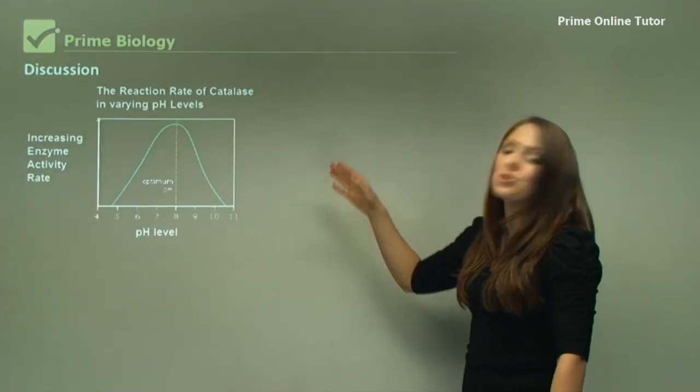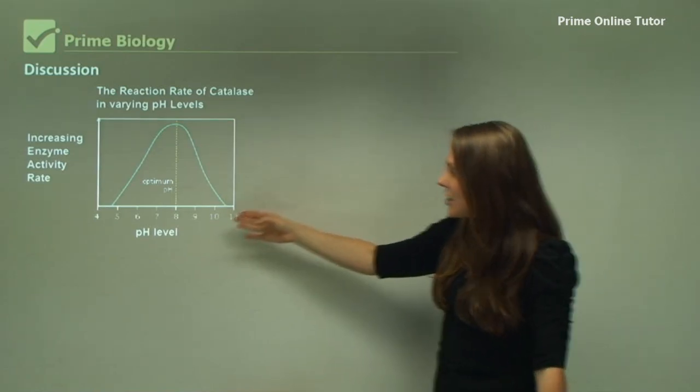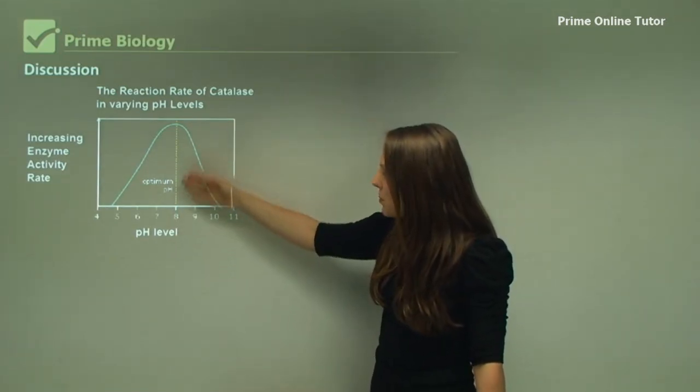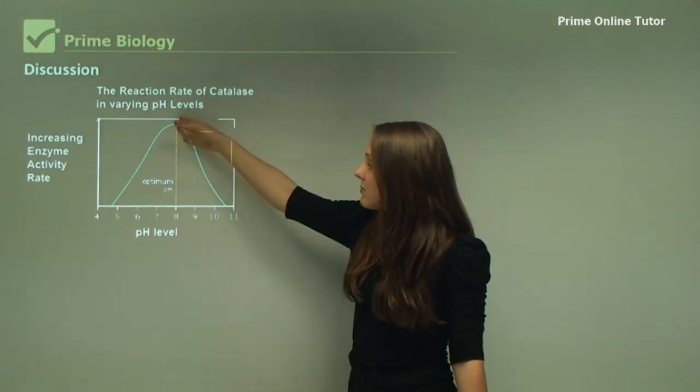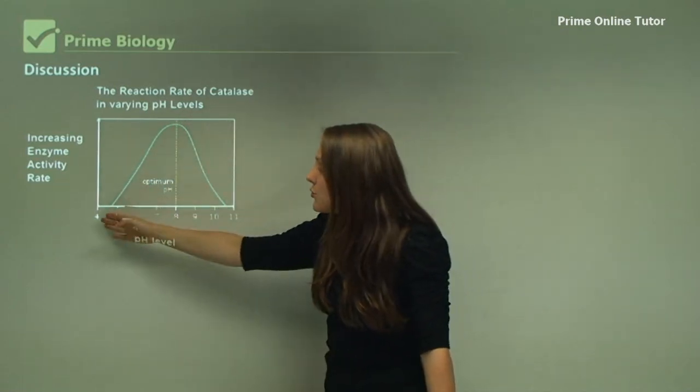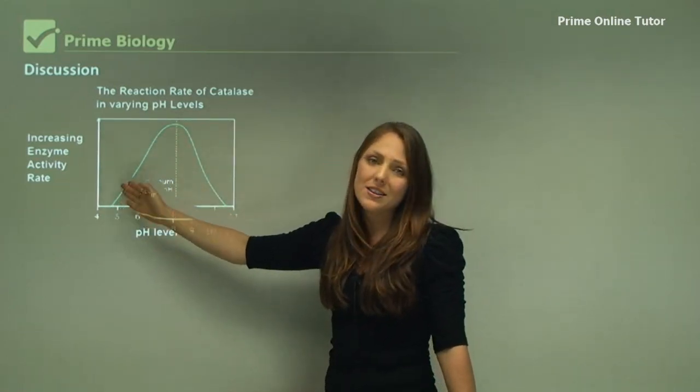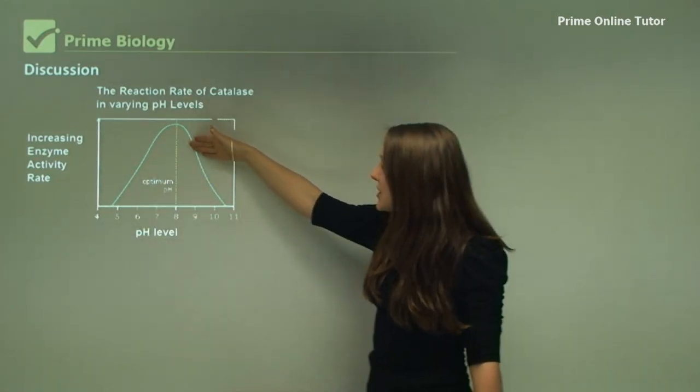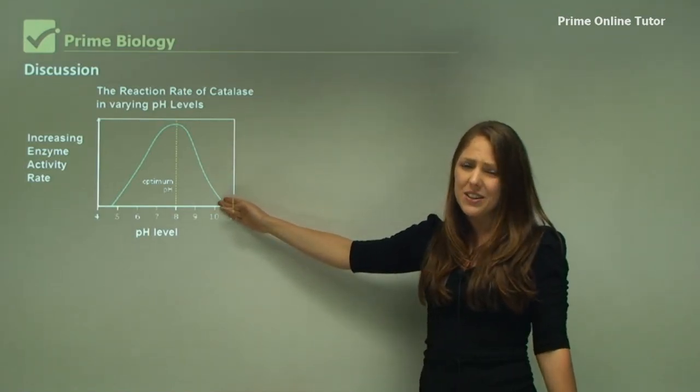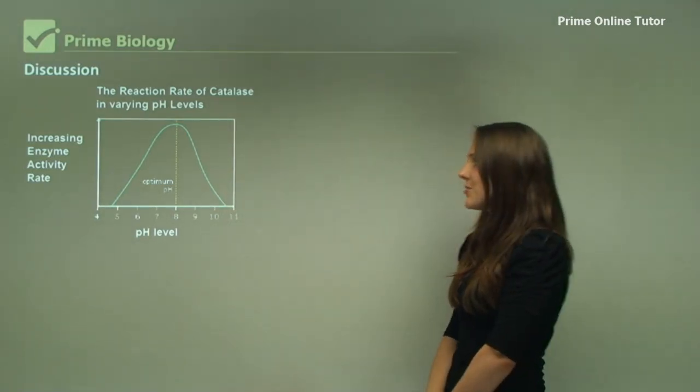Now this here is a graph that actually demonstrates this. You can see at the pH optimum is around about 7 and at pH of 4 there is no enzyme activity. At pH of 10 you can see it's just a little bit of enzyme activity, so it's still able to work in this pH of 10.